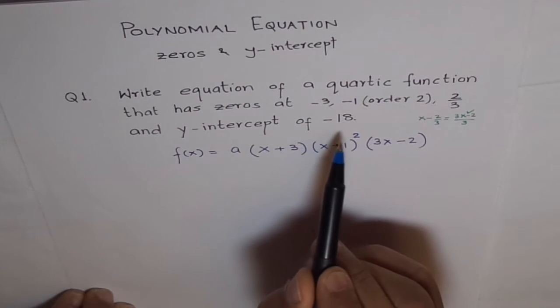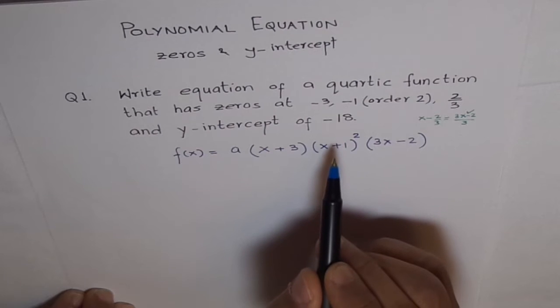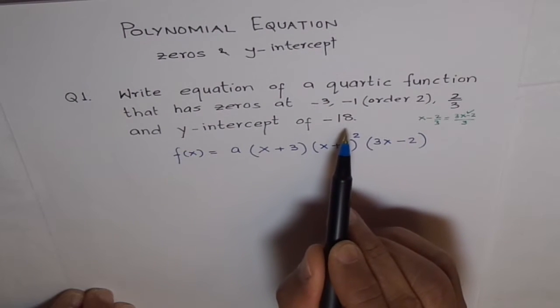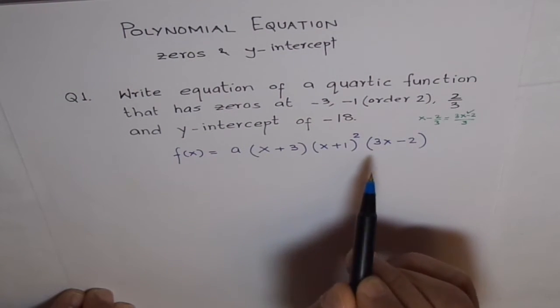Now, y-intercept of minus 18. This helps us to determine exactly the equation of the function. If this condition is not given to us, what happens to us? We land up with family of functions with common zeros, okay?